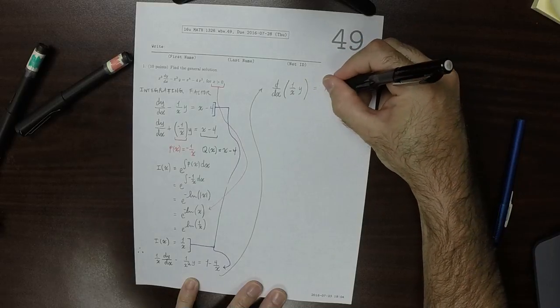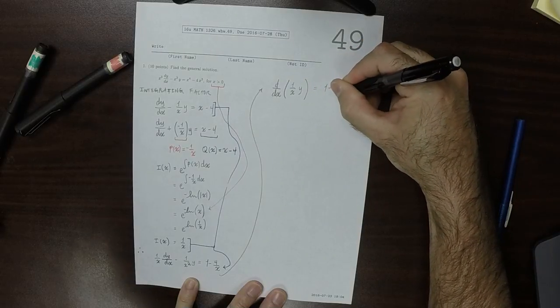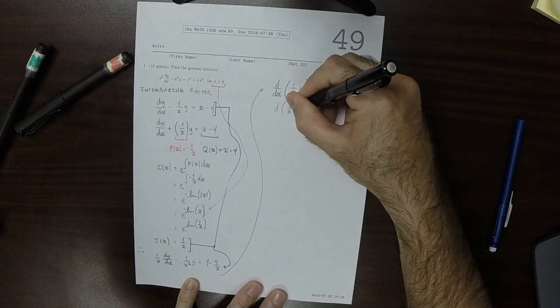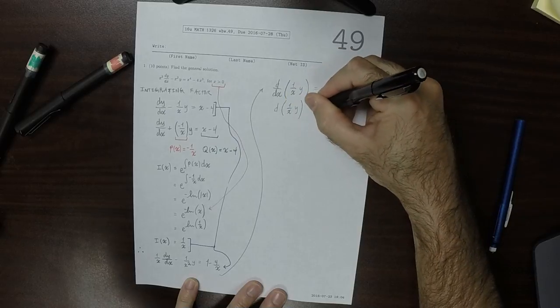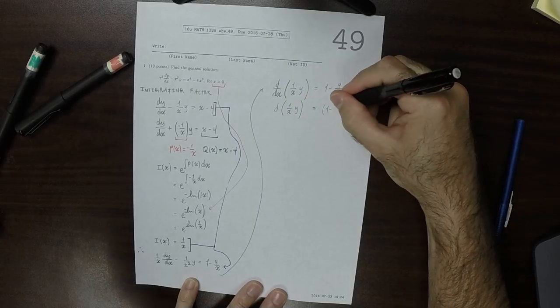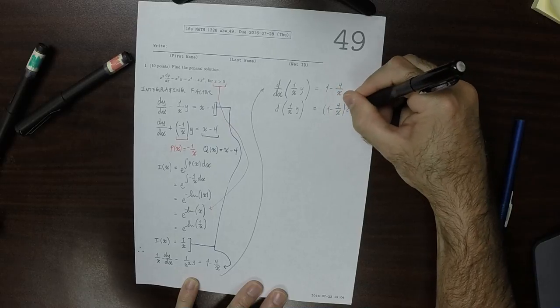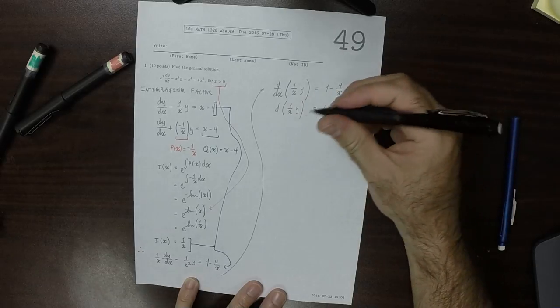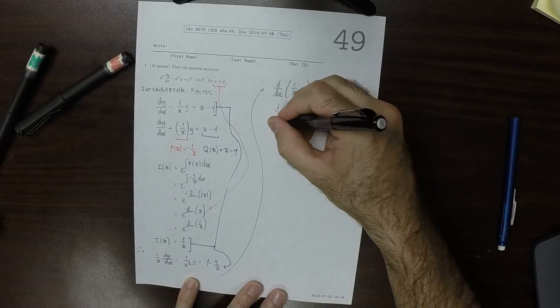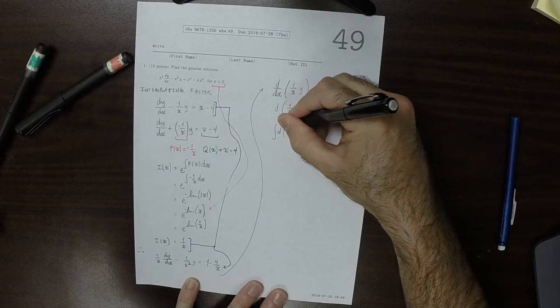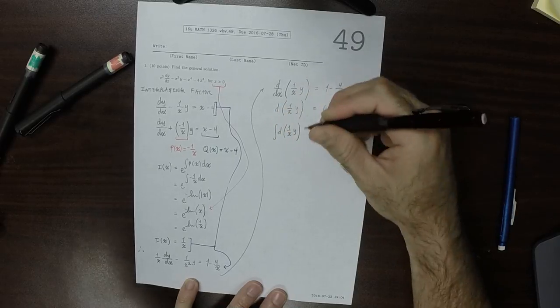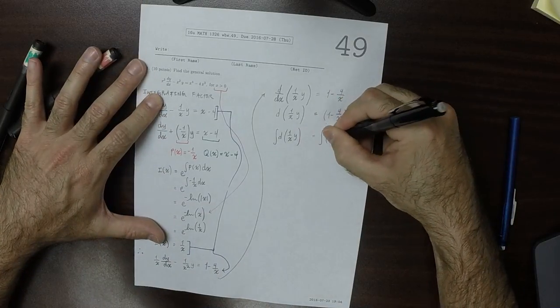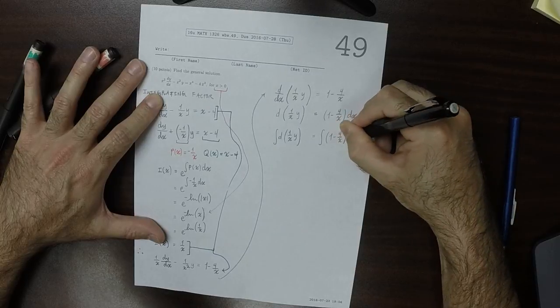Equal to 1 minus 4 over x. So then d, 1 over x y is 1 minus 4 over x dx. So we can anti-differentiate both sides. So anti-derivative differential 1 over x y is anti-derivative 1 minus 4 over x dx.